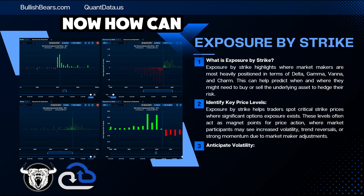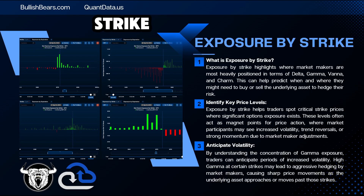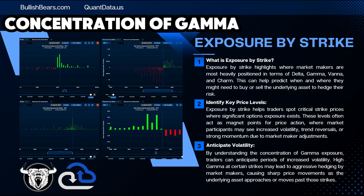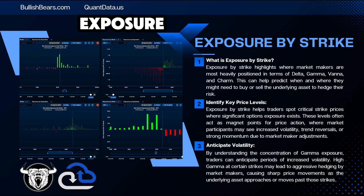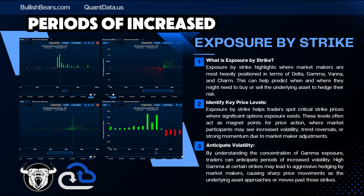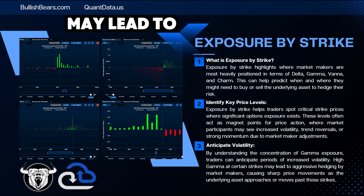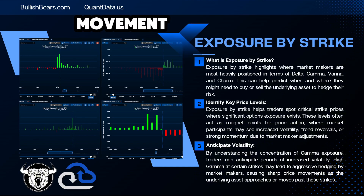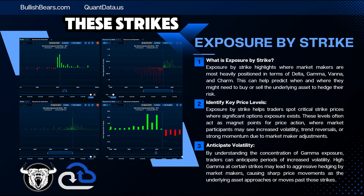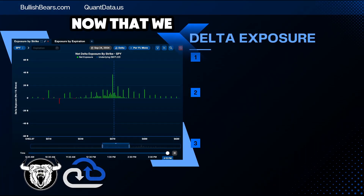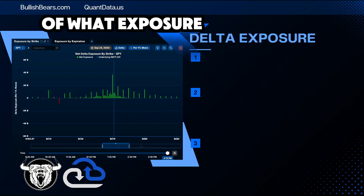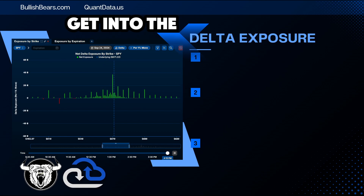How can we anticipate volatility with Exposure by Strike? By understanding the concentration of gamma exposure, traders can anticipate periods of increased volatility. High gamma at certain strike prices may lead to aggressive hedging by market makers, causing sharp price movements as the price of the underlying asset approaches or moves past these strikes. Now that we have an understanding of what Exposure by Strike is, let's get into the Greeks so we can really understand how we can use them in our trading.